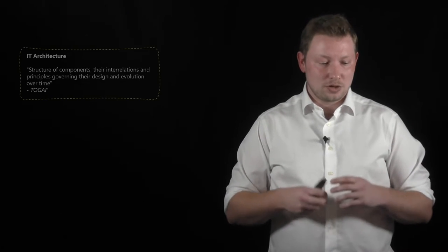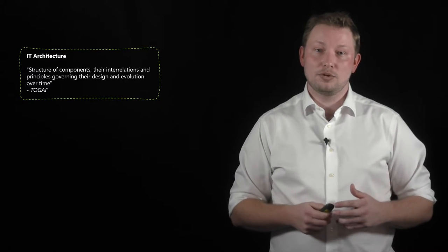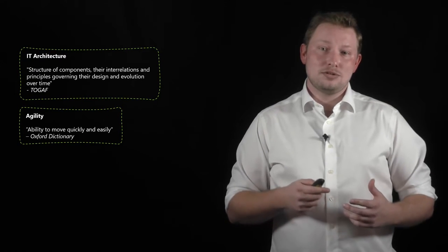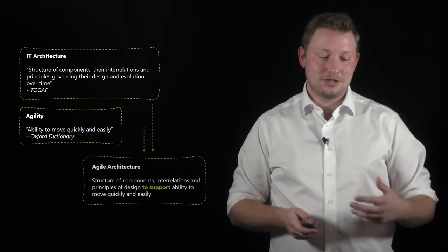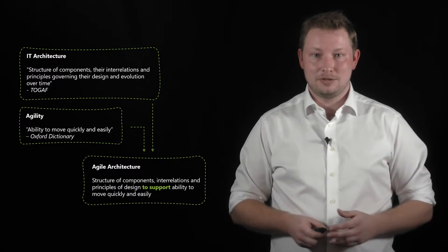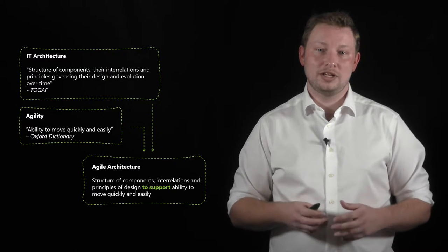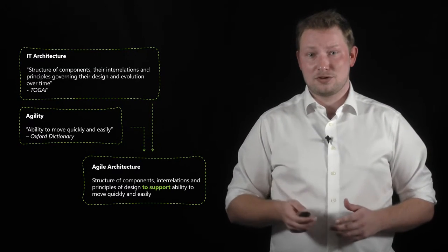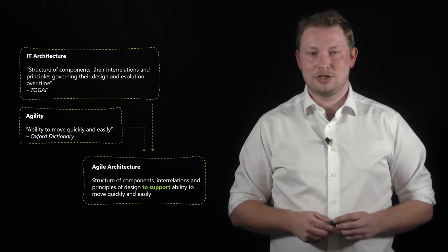I have a few colleagues — Konstantinos and Kristina — who you will meet throughout. The question is: what is agile architecture? Togaf says it's the structure of components and their interrelations, while agility is the ability to move quickly and easily. So agile architecture is architecture that supports agility — being able to deliver things incrementally, learn from it, and shift directions if needed. In practice, it's a bit more difficult.